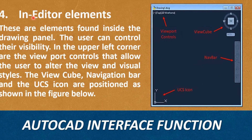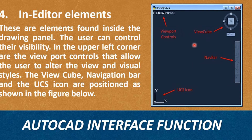Fourth, In-Editor Elements. These are found inside the drawing panel. The user can control their visibility. In the upper left corner are viewport controls that allow the user to alter the view and visual styles. The ViewCube, Navigation Bar, and the UCS Icon are positioned as shown in the figure.